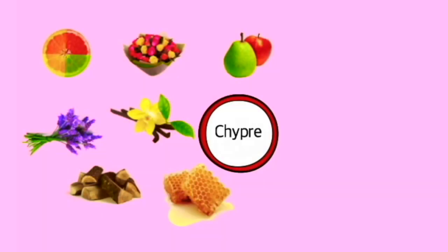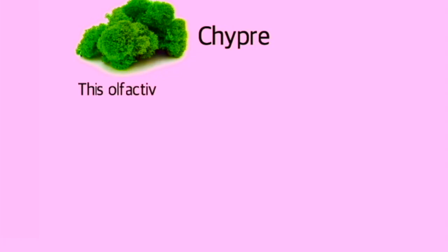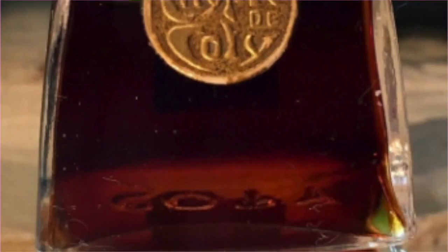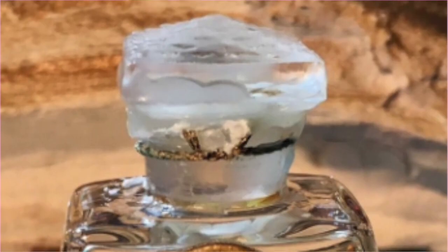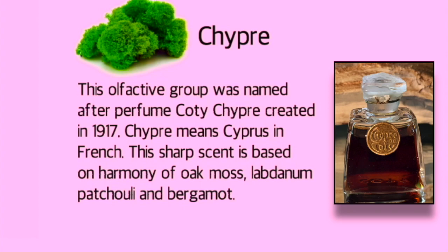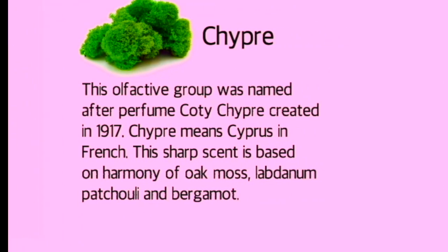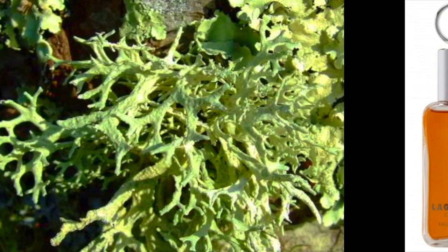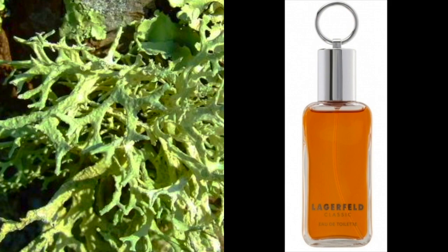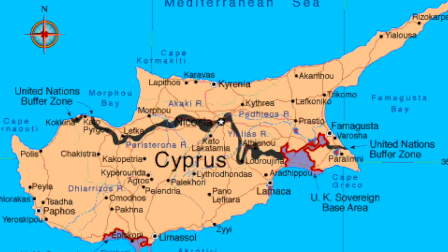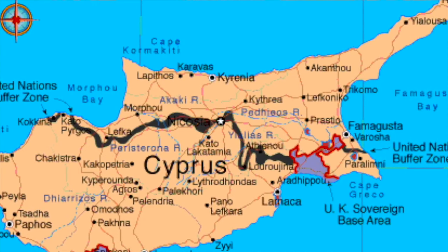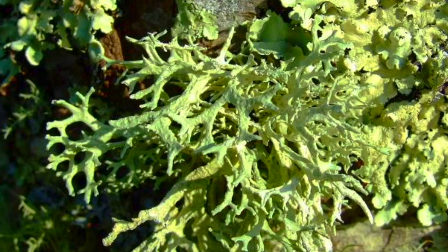Next we have chypre — pronounced 'SHEEP-ra.' This group was named after a perfume created by François Coty, simply called Chypre, created in 1917. Chypre means cypress in French, and the scent is based on a harmony of oak moss, labdanum, patchouli, and bergamot. Fragrances in this category usually start off with a citrus top note and dry down to an animalic, mossy base, with most ingredients sourced from the Mediterranean region. A chypre fragrance can be worn pretty much any time — it's very versatile.